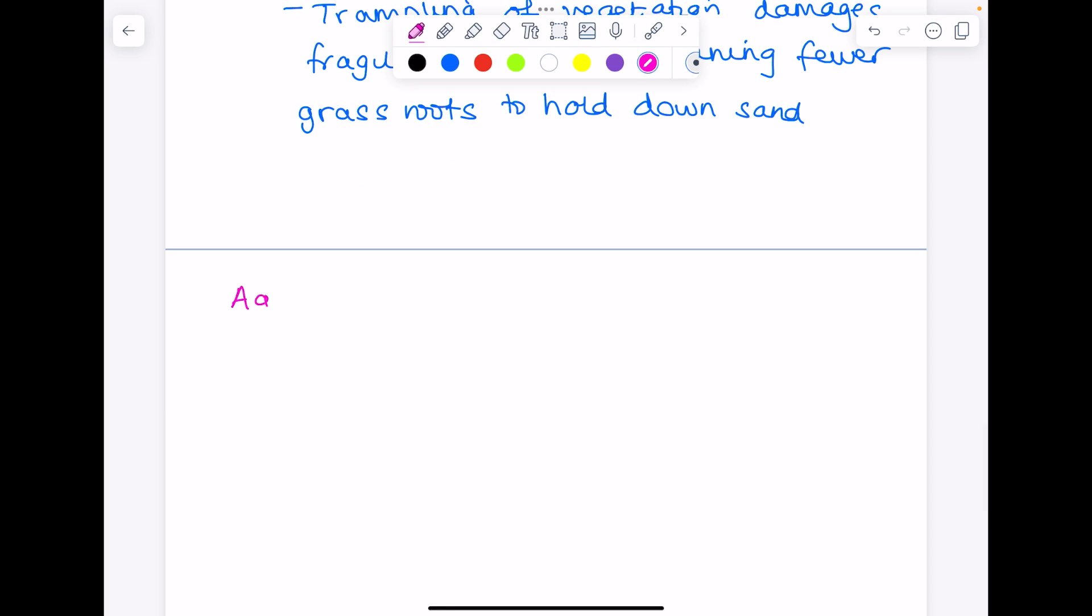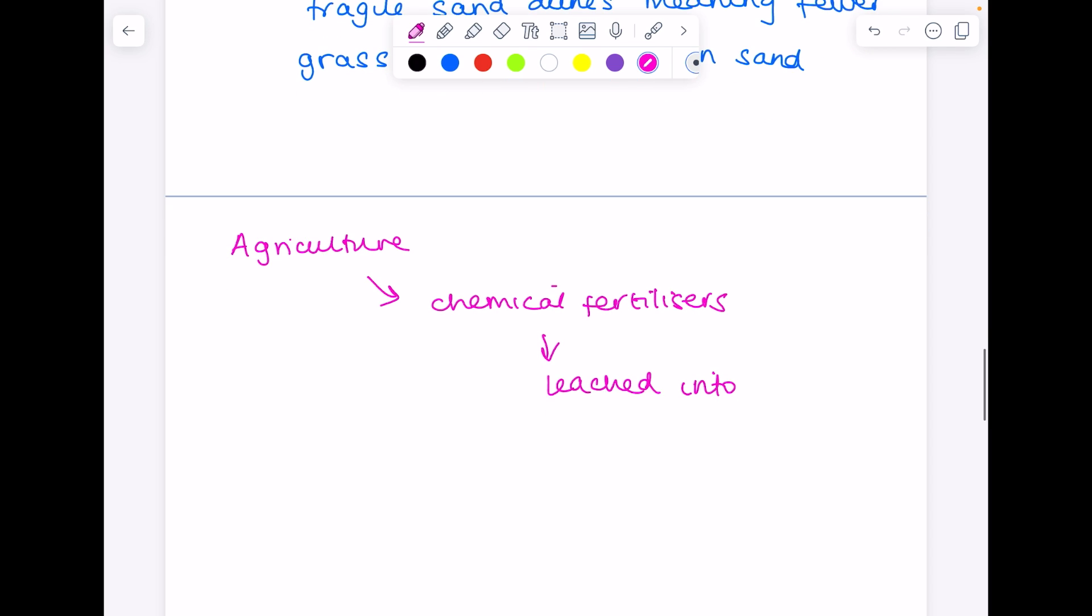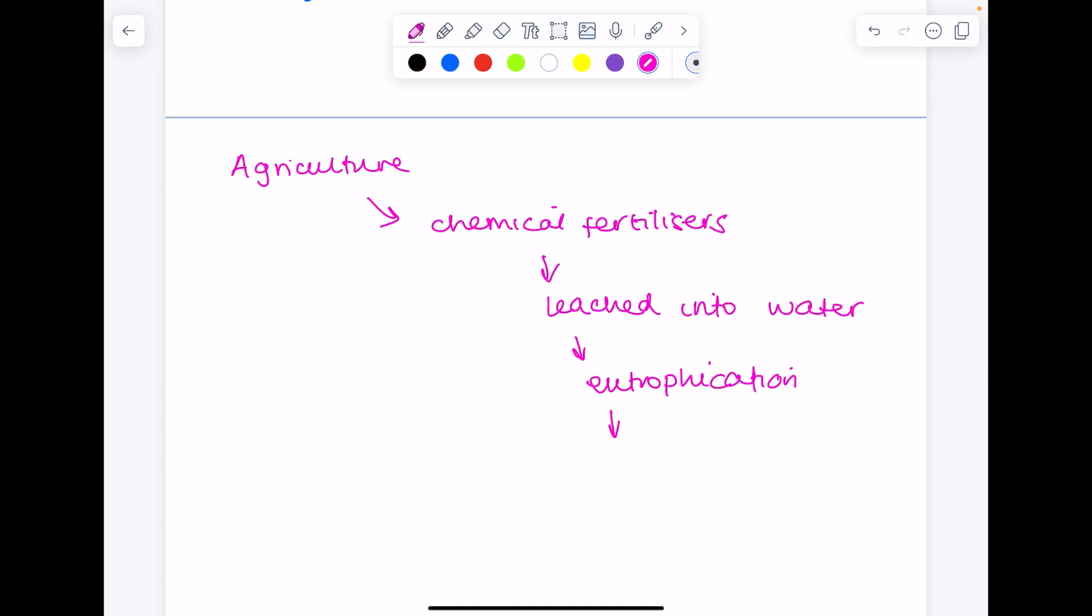Lastly, agriculture or farming. Farming often uses chemical fertilizers. When it rains, these may be leached - washed into the sea or onto salt marshes. Make sure your answer is relevant to the exact question being asked. I'm just going to write leached into water, which leads to eutrophication - that's the build-up of algae. When the algae dies, bacterial numbers increase, using up all the oxygen, making that water very lacking in oxygen, therefore reducing aquatic life and damaging the ecosystem.